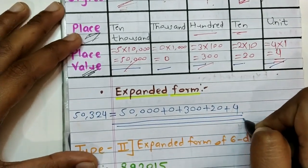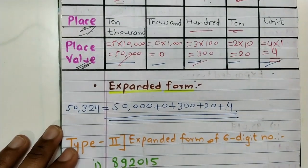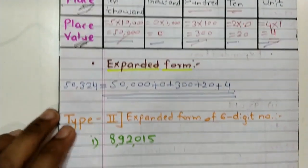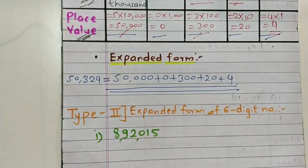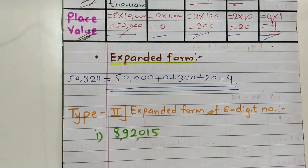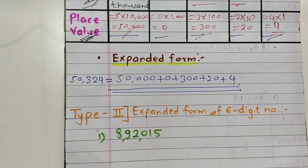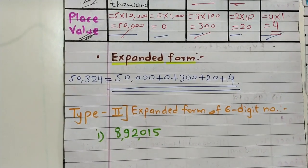This is our required answer. Our type one is over. Then type two — we will solve some examples. Our type two is expanded form of six-digit numbers. The first number given is 892015.